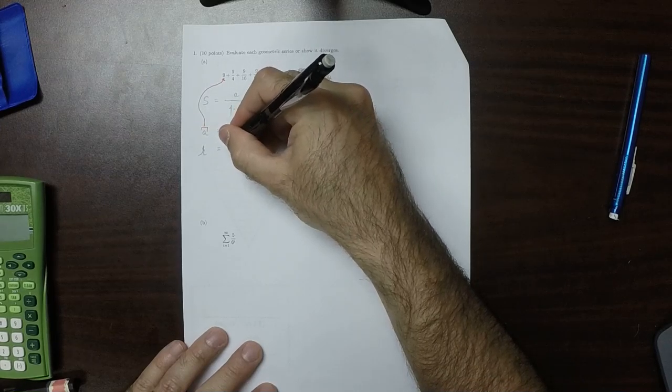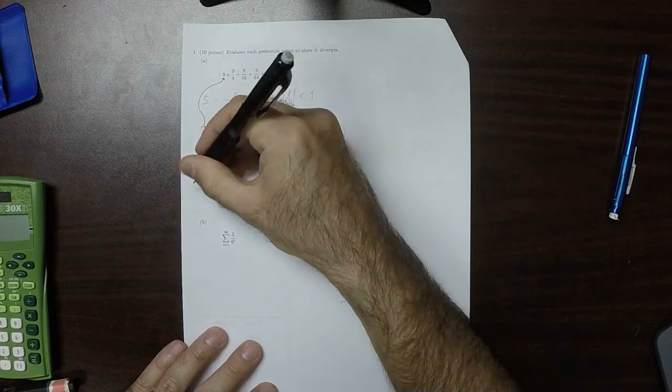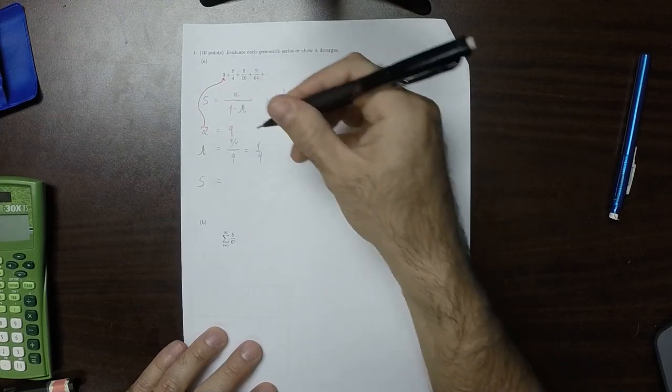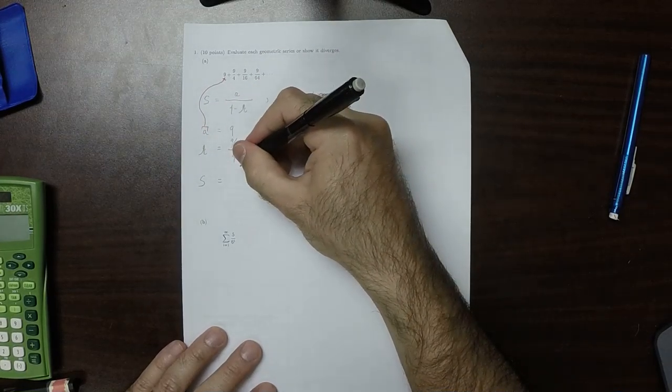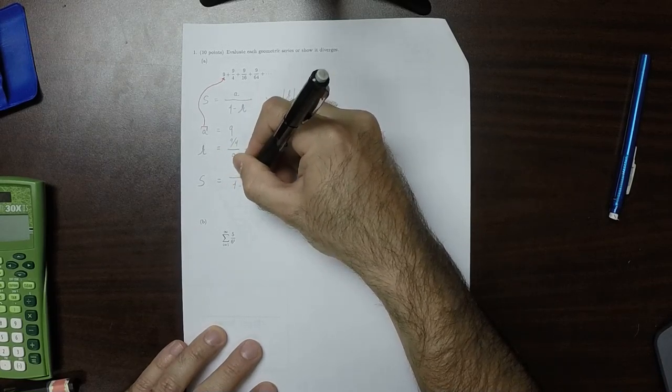So, for example, 9 over 4 divided by 9. Well, that's a fourth. So the answer to part A will be 9 divided by 1 minus 1 fourth.